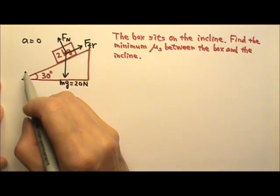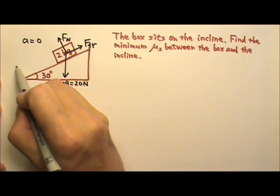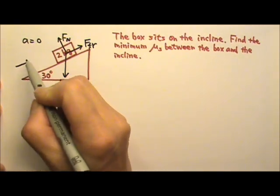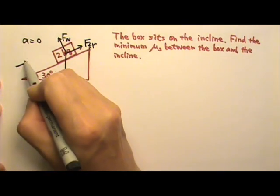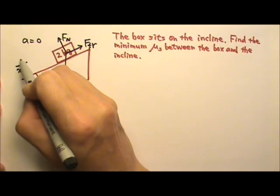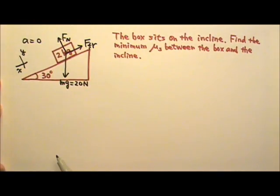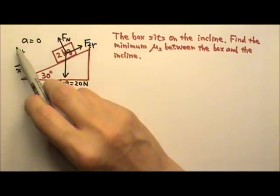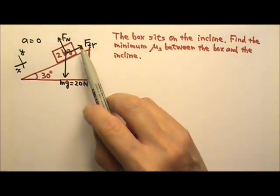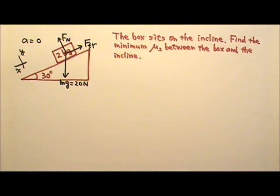We are going to use the slanted coordinate system. Along the incline is our x-direction, and perpendicular to the incline is our y-direction. So in this coordinate system, Mg is the slanted force.